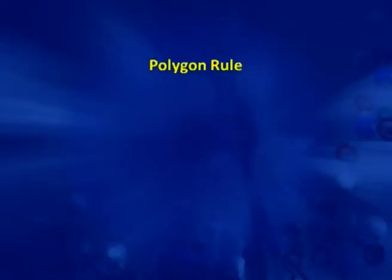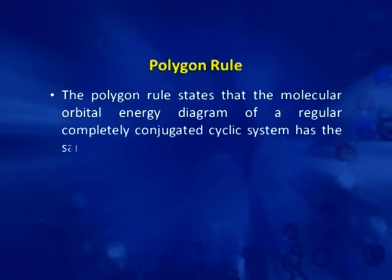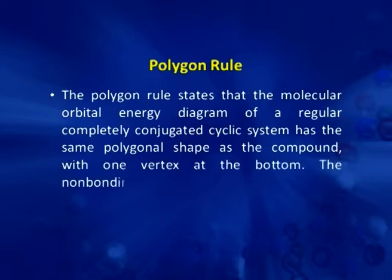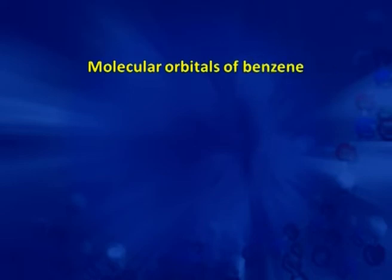To understand the 4n+2 pi electrons, we first have to discuss the polygon rule. According to this polygon rule, the molecular orbitals arrange energy-wise according to their cyclic system, and it has the same polygon shape as the compound with one vertex at the bottom, and the non-bonding line cuts horizontally through the centre of the polygon. For this, we discuss the example of benzene.